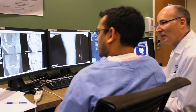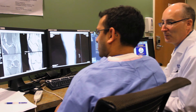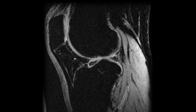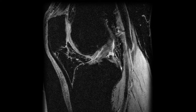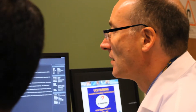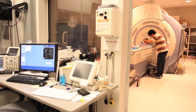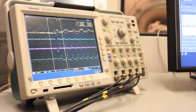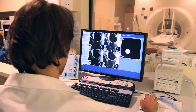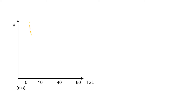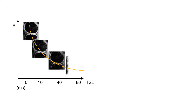Early degeneration of the cartilage in osteoarthritis consists of biochemical changes, including damage to the collagen proteoglycan matrix and the elevation of water content. Researchers at MQIR are involved in the development and optimization of advanced MR imaging techniques to non-invasively detect these early signs of cartilage degeneration, one of them being high-resolution T1-rho relaxation time mapping.